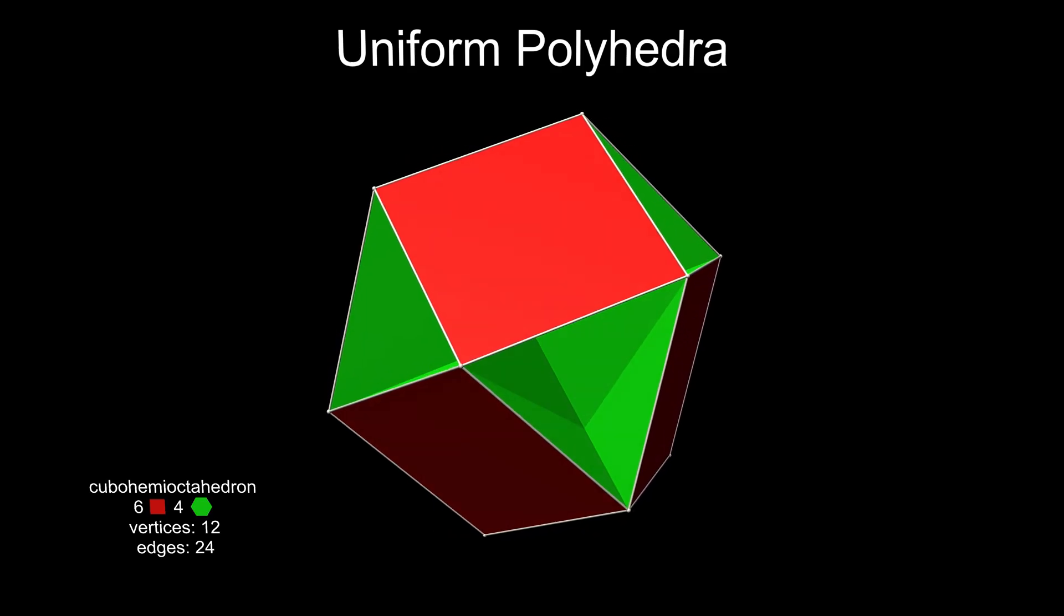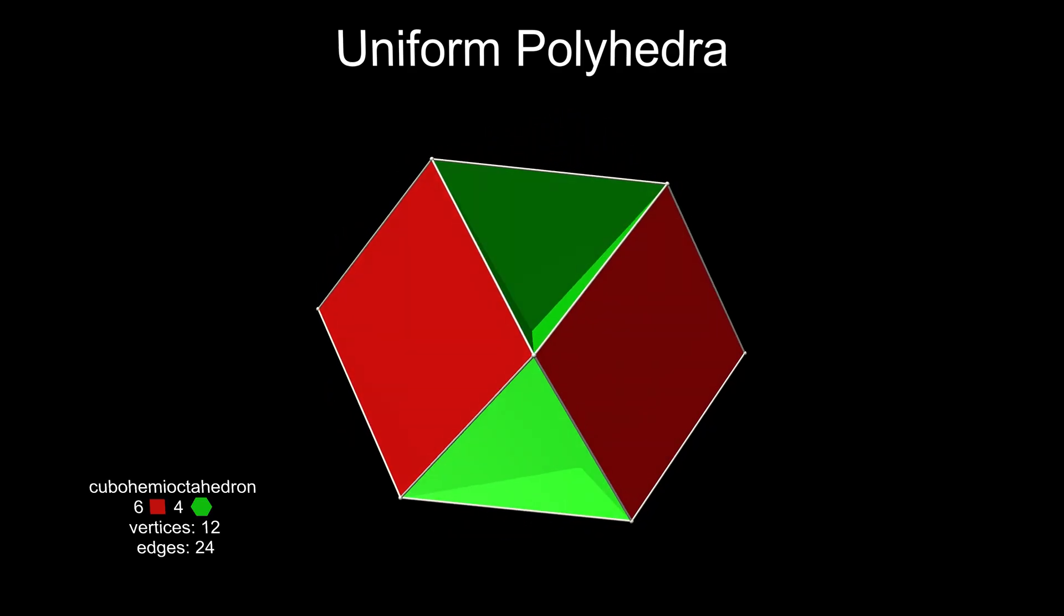These hemipolyhedra have an undefined density and a dual cannot be constructed in the normal way.